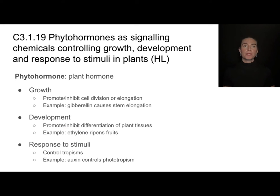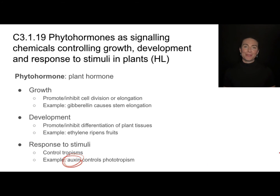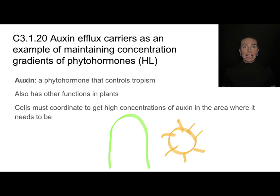Hormones also help plants respond to stimuli. Plants don't have skeletal muscle like you, but they do respond — just not always with movement. That response to stimuli can look like growth. Those phototropisms and gravitropic tropisms we discussed are a great example of how plants respond to stimuli using hormones. If I only have room in my brain for one plant hormone, it's going to be auxin.